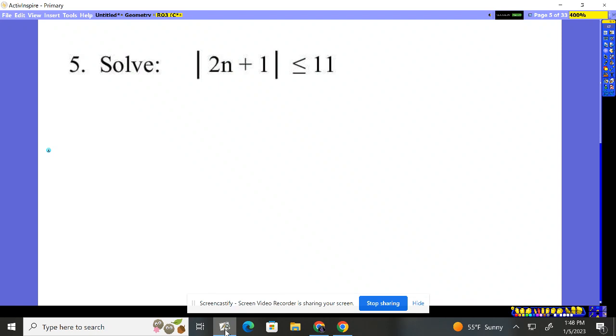Number five, the absolute value of 2n plus 1 needs to stay smaller than 11. It needs to be within 11 feet of our target. So everything needs to stay within 11, be less than 11.